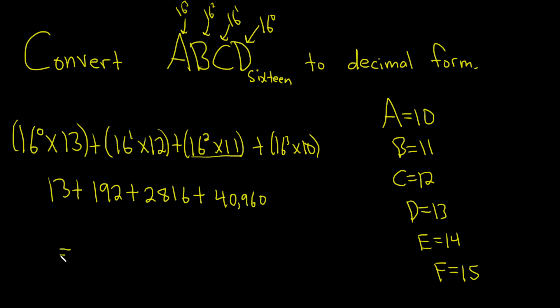Okay, now we just add up all these numbers. So 13 plus 192, plus 2,816, plus 40,960. I got 43,981.